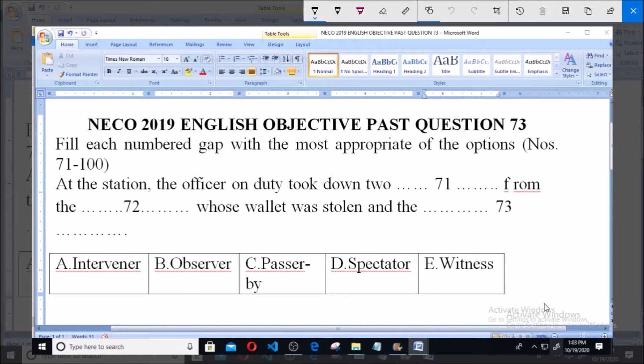Welcome, this is NECO year 2019 English objective, question number 73. It says fill each numbered gap with the most appropriate of the options, and this instruction is applicable in answering question number 71 to 100.